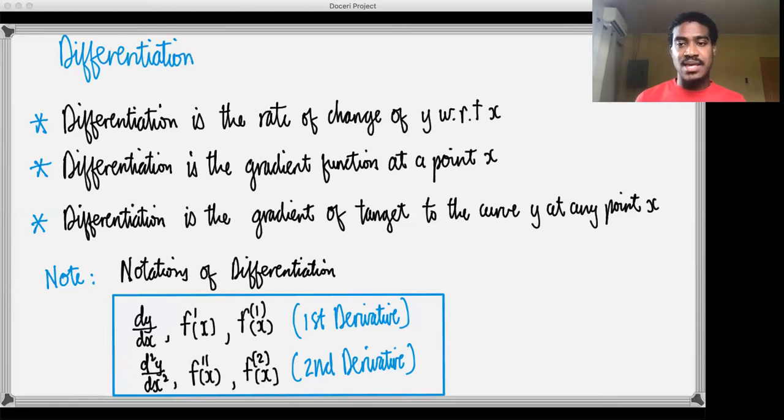In terms of the application of differentiation, differentiation can be used to find the gradient of the normal to the curve, the gradient of the tangent to the curve, and also it could be used to find stationary points. So that is very key. Those are some key things to note where the application is concerned.